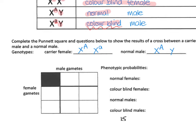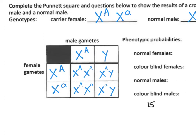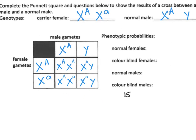Here is what your Punnett square should look like. For the phenotypic probabilities: normal females — there are two out of four, which simplifies to one half. Colour blind females — there aren't any, so zero. Normal males — one out of four, so a quarter. Colour blind males — also a quarter. So the probabilities are one half, zero, one quarter, and one quarter.